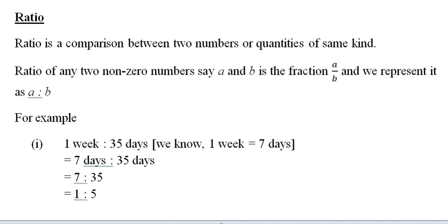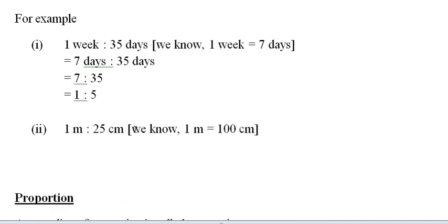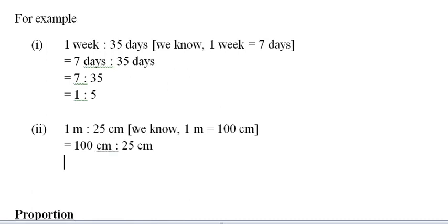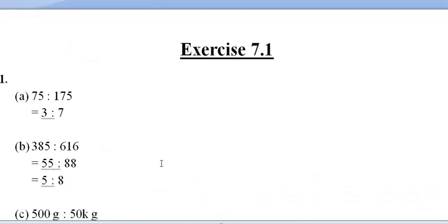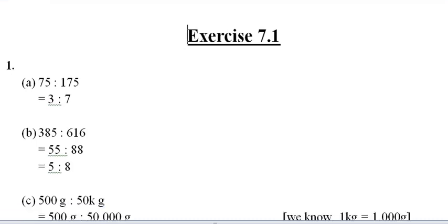Similarly, one meter is to 25 centimeters. We know one meter equals 100 centimeters. So we write 100 centimeters is to 25 centimeters, cancel the units, and simplify: 25 goes into 100 four times, giving us 4 is to 1. Remember, in a ratio there will only be numbers — no units like days, meters, rupees, or grams. Let us start with Exercise 7.1.